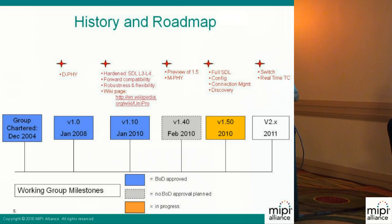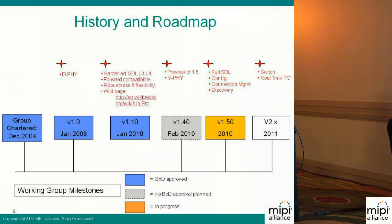Since version 1.1, we have maintained wiki pages where you can find more detail on the UniPro architecture and each layer. We are now working on UniPro version 1.5. Before releasing 1.5, we did a preview called version 1.4, which was not going to be approved by the board — it was intended just to give customers a preview of how UniPro would look. Released in February this year, it mainly integrates the PHY adaptation layer to M-PHY, representing the big change from D-PHY to M-PHY.